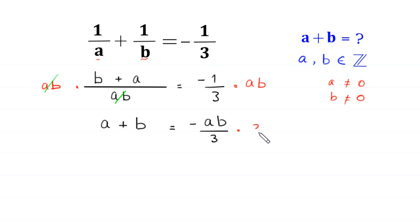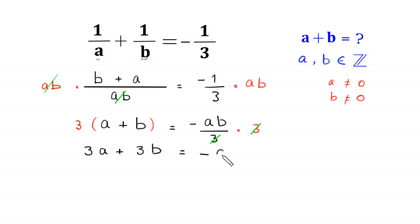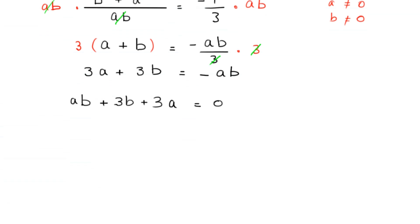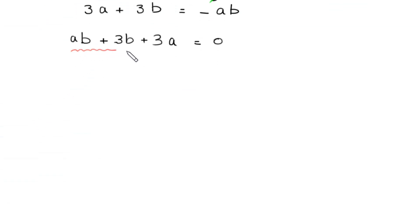We multiply both sides of this equation by 3. On the left-hand side, 3 times a becomes 3a, plus 3 times b becomes 3b. On the right-hand side, the 3 cancels, and we are left with negative a times b. We move negative ab to the left-hand side, so it becomes positive ab, giving us ab plus 3b plus 3a is equal to 0.